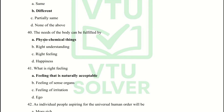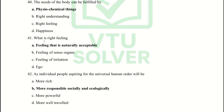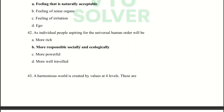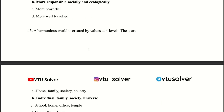Next question: The needs of self and body are different. Next question: The needs of the body can be fulfilled by physiochemical things. Next question: What is right feeling? Answer: Feeling that is naturally acceptable. Next question: As individuals aspiring for universal human order, people will be more responsible, social, and ecological.